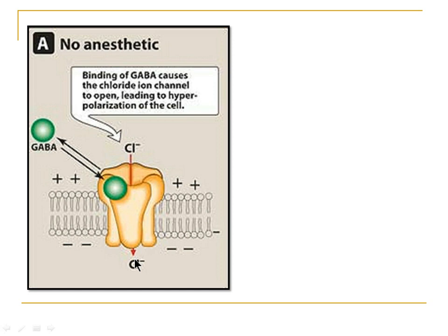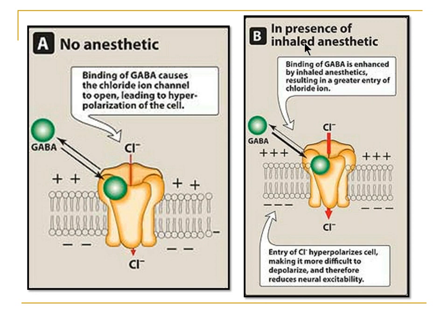Here we can see the plasma membrane with a chloride-specific ion channel. The GABA receptor binds to this chloride channel and opens it, leading to influx of chloride, which results in hyperpolarization of the plasma membrane and reduced excitability of the cell. When anaesthesia binds with the receptor, the activity of GABA is further enhanced, causing greater chloride influx, hyperpolarizing the cell and making it more difficult to depolarize — thereby reducing neural excitability.